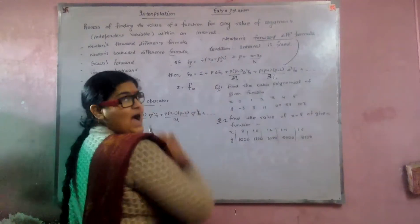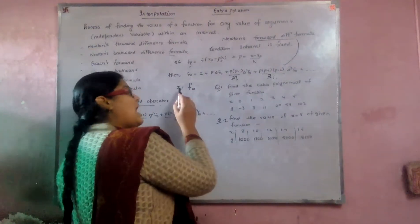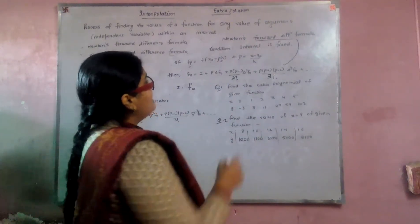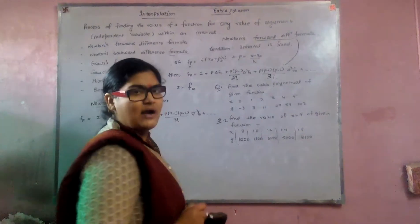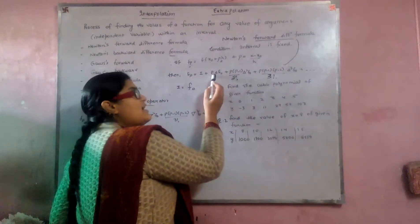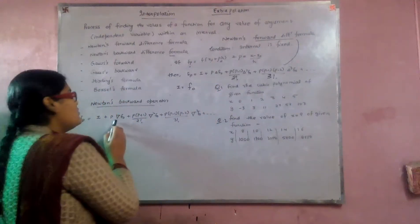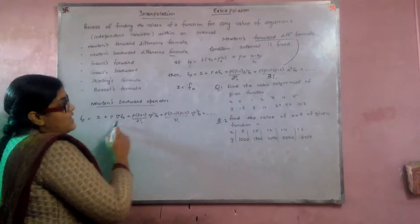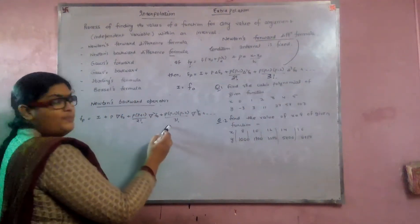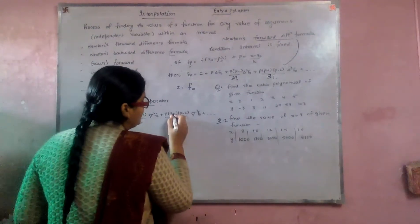Here, the identity element I is just f naught, the initial value of the function. For Newton's backward difference formula, there is a slight change: here we apply the forward difference operator, whereas in the backward formula the backward operator is applied. The sign convention also changes — we use subtraction here, whereas in the backward formula we use a negative-positive operation.